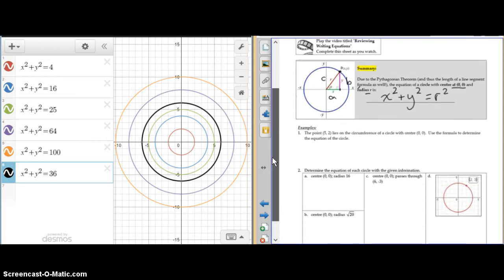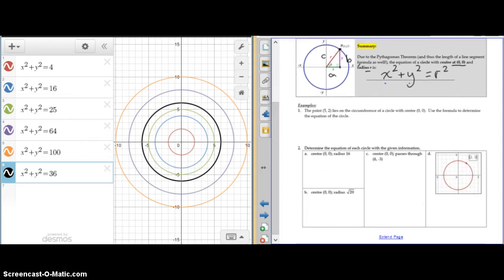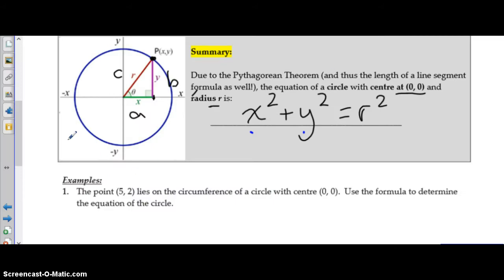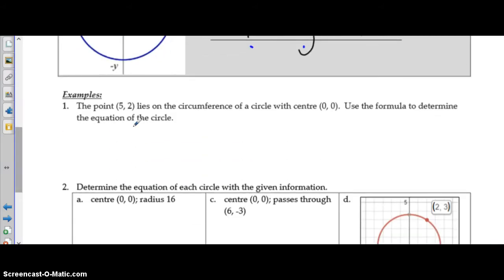You may get some other questions, like this one. They haven't told you what the radius is, but they have given you a point on the circumference of the line.